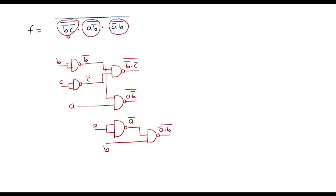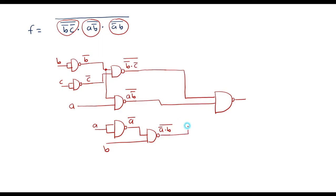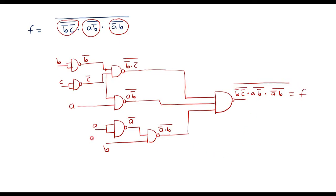Now we have three terms: (b̄c̄)̄ dot (ab̄)̄ dot (āb)̄, with a complement over the whole thing. So I take one more three-input NAND gate. The inputs are the outputs of the three previous NAND gates connected here. The output is [(b̄c̄)̄ · (ab̄)̄ · (āb)̄]̄, which is exactly our function f. Thus we have implemented the given function using only NAND gates.